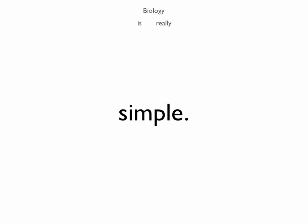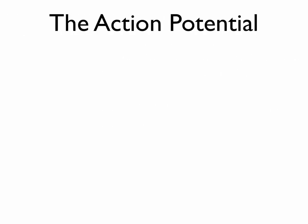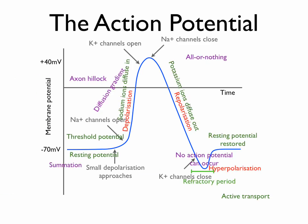Biology is really simple. Everything in biology works based on a few basic principles. The action potential is a really good example of this. It might look really complicated, but all you need to know is how diffusion and active transport moves ions.